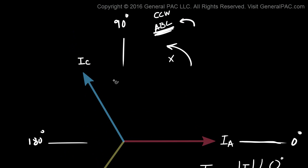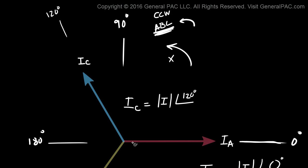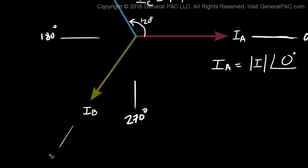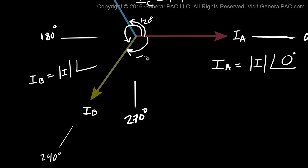Now if we evaluate IC, we're going to assume that IC is at 120 degrees. So IC equals some magnitude I — the same magnitude as IA — but now it's at 120 degrees with respect to the reference line. So we're going 120 degrees in this direction and we get IC. Now IB, we're going to say that it's at about 240 degrees, which means IB equals some magnitude I. Instead of going 240 degrees in this direction, we're going to go in the opposite direction, 120 degrees, and we get IB.